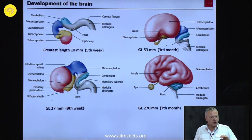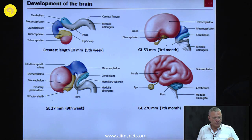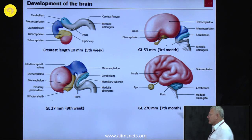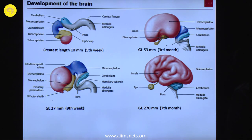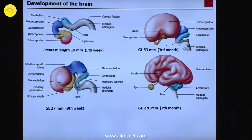Later on, blood vessels take over and the liquor itself — the CSF — has no longer any nutritive function, perhaps for the ependyma, but most nourishment is done exclusively by blood vessels. The hemisphere rotation then dictates the form of the ventricles. In the spinal canal it's still just a small narrowed remnant of the neural tube.